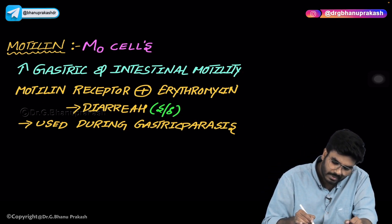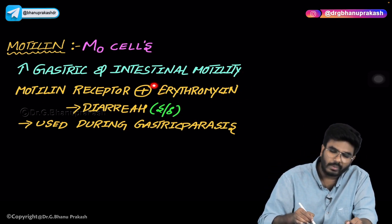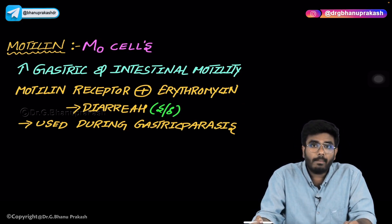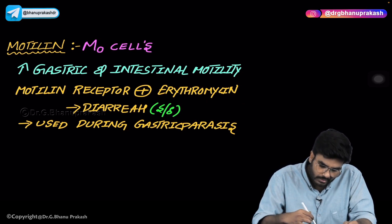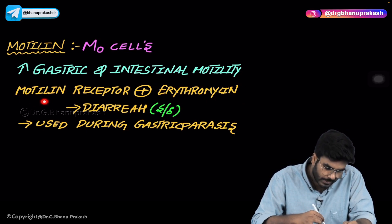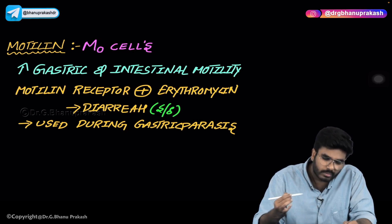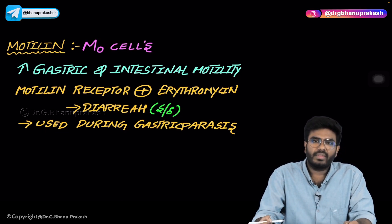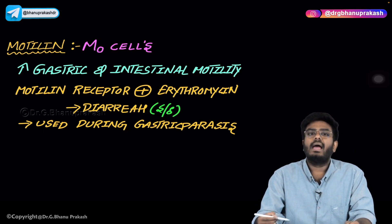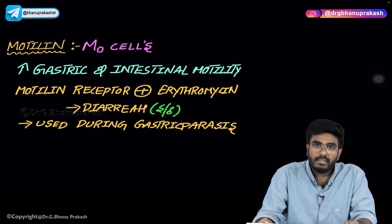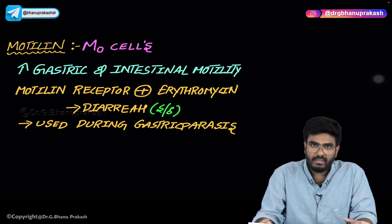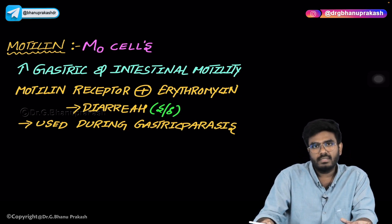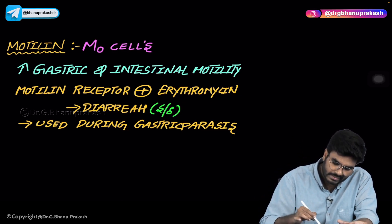Motilin receptors can be stimulated by a drug called erythromycin. Erythromycin is a macrolide — an antibacterial drug. But it has a side effect: erythromycin can stimulate motilin receptors. So the side effect of erythromycin is diarrhea, because it increases GI motility.